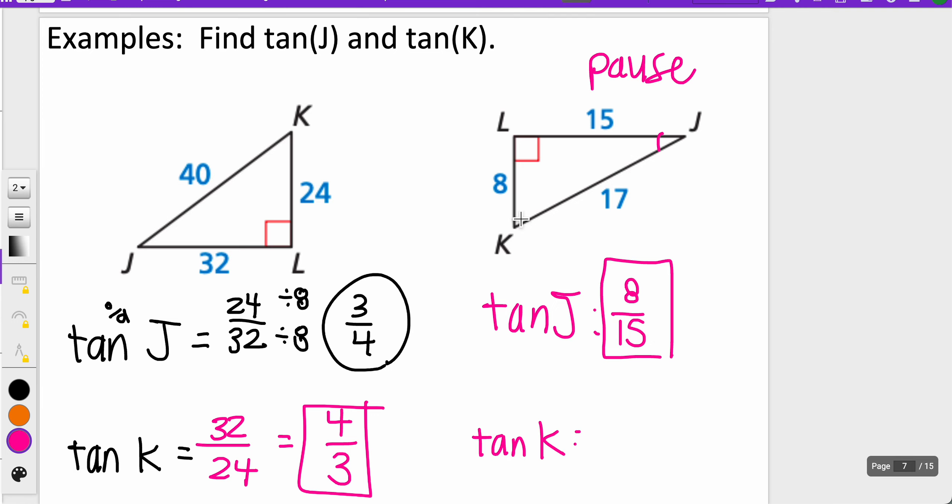And then the tangent of K. Opposite of K is 15, adjacent is 8. So J and K are those two acute angles, and they're just going to show the inverses or the reciprocals of one another.